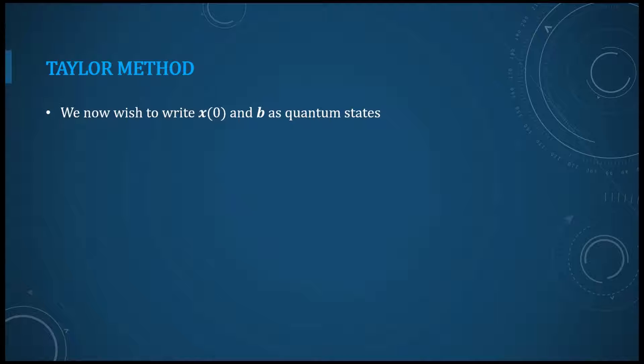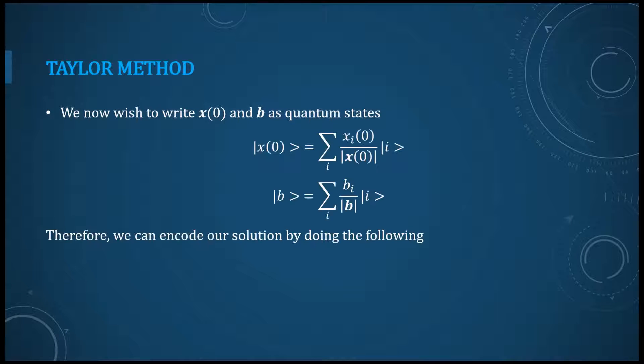We can do this as the following: we can take each component of the b and also of the x zero to then get the corresponding states.